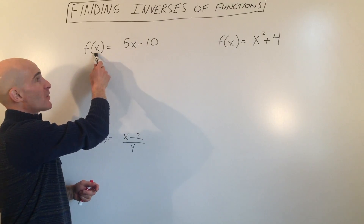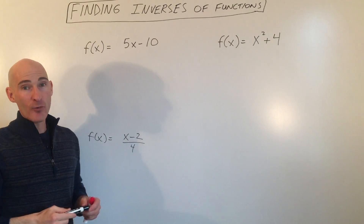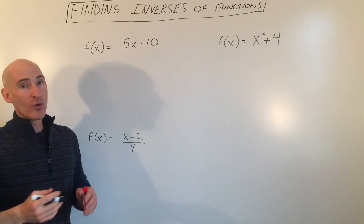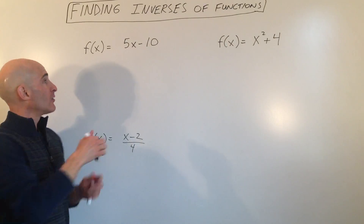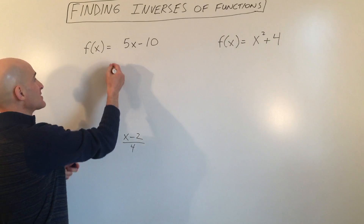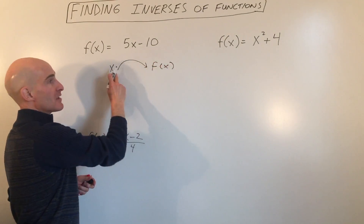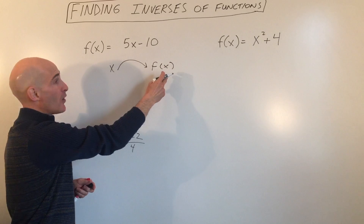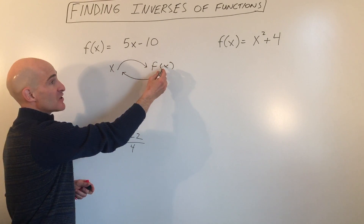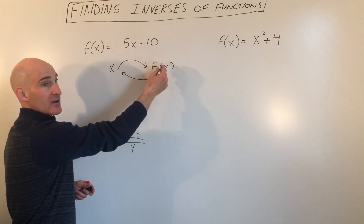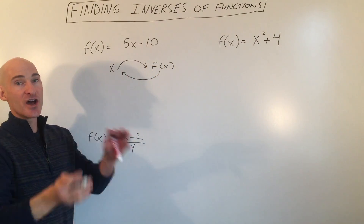x is the input, f of x is the output. What we want to do with an inverse function is we want to reverse that, so that now if x is taking you to f of x — the input taking you to the output — we want a function that's going to reverse that and take you from the output back to the input. So something that undoes the function.